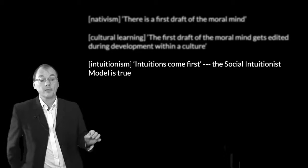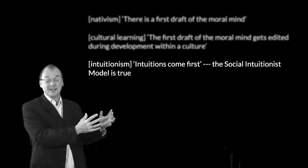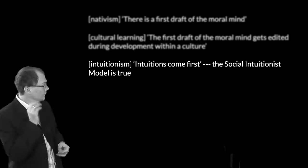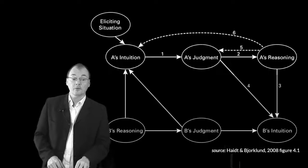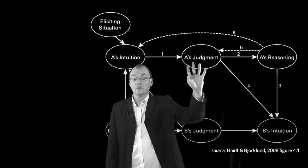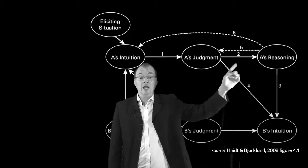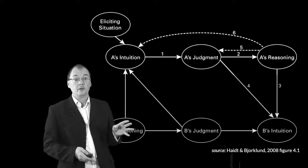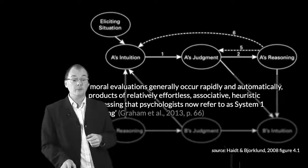The third claim is a big one — actually a series of claims in itself. This is that the social intuitionist model is true. The social intuitionist model — we came across this briefly before — is summarised in a diagram. The diagram is supposed to provide a causal model of how people form ethical judgments and how their ethical judgments then lead to reasoning. The social intuitionist model itself is quite complicated, but I think there are two claims which are particularly important.